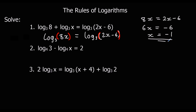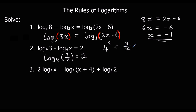The second example: log base 4 of 3 minus log base 4 of x equals 2. Two base-4 logs subtracted means we divide the answers, giving log base 4 of (3/x) equals 2. Converting out of log form: 4 squared equals 3 over x, so 16 equals 3/x. Multiplying both sides by x then dividing by 16 gives x equals 3/16.